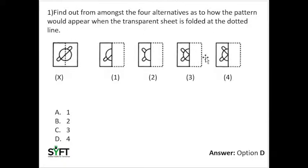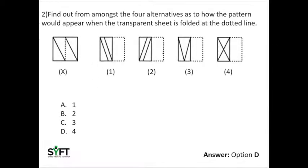In the third option, when we fold the sheet along this axis, it shows both lines, but there is a mistake — when we fold the paper towards this side, this line would turn towards the other side, whereas it has turned towards the inner side of the circle. But in option 4, after folding the paper we get the lines towards the outer side of the circle, therefore the correct answer is option number 4.